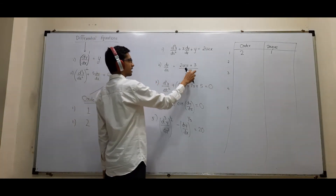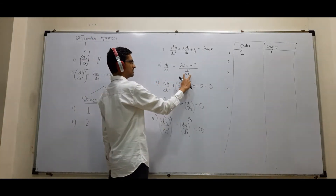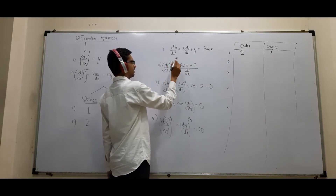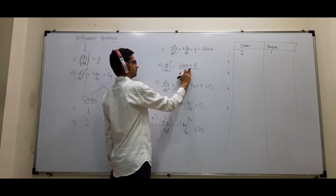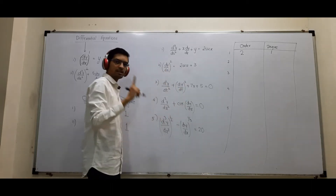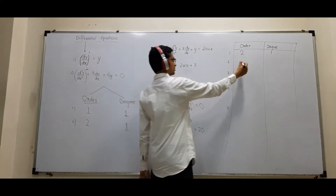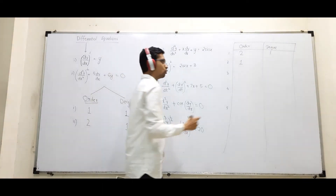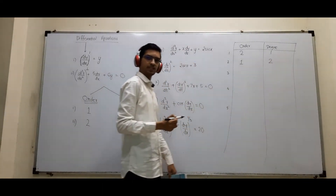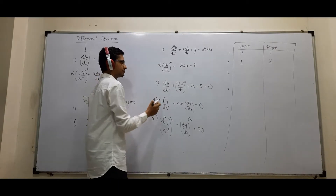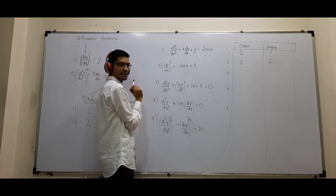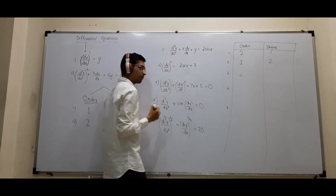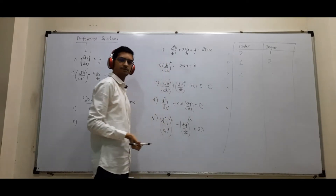For the second problem, the derivative cannot be in the denominator, so first I take it to the numerator. Doing so gives (dy/dx)². The highest derivative is still the first derivative, so order = 1, and the power is 2, so degree = 2. For the third problem, the highest derivative is second order, so order = 2, and its power is 1, so degree = 1.